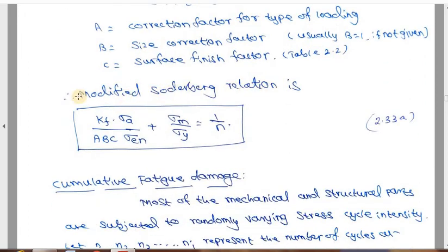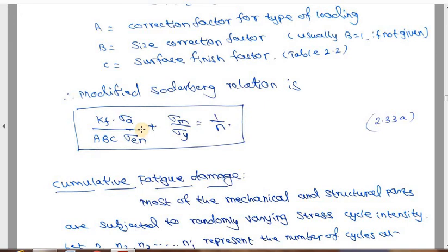The modified Soderberg relation is very important: (K_F × sigma_a) / (K_A × K_B × K_C × sigma_en) + sigma_m / sigma_y = 1/n. This equation is available in the design data handbook (equation 2.53A). Similarly, the Goodman equation replaces sigma_y with sigma_u, making the whole equation the modified Goodman equation. The Soderberg and Goodman equations are similar except that sigma_y in Soderberg becomes sigma_u in Goodman. If the values of K_F, K_A, K_B, K_C are not given, students should use the simple Soderberg or Goodman equation; if these constants are given, use the modified equation.